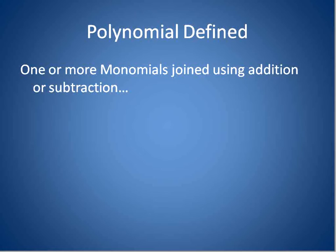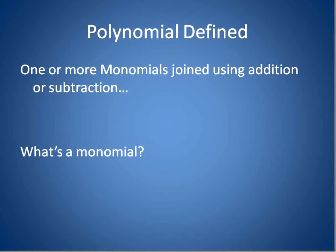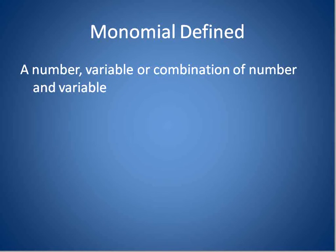A polynomial, defined: it's one or more monomials joined together using addition and subtraction. That's it. But for us to understand this definition at all, we have to understand what a monomial is. Because if you're joining together one or more monomials to make a polynomial, we have to know what a monomial is and what a monomial isn't.